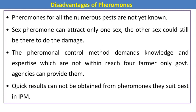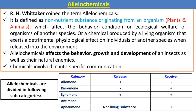Disadvantages: pheromones for all numerous pests are not yet known. Sex pheromones can attract only one sex, so the other sex could still be present to cause damage. Pheromonal control methods demand knowledge and expertise not within reach for farmers — only government agencies can provide them. Quick results cannot be obtained from pheromones, so they are best used within IPM.